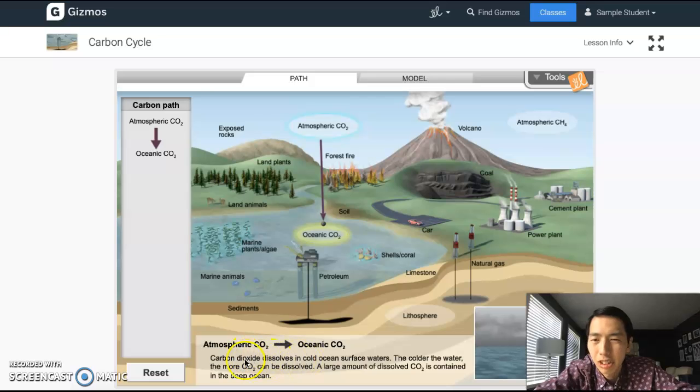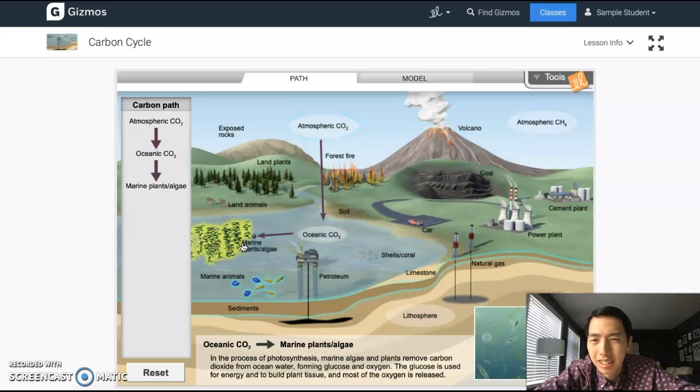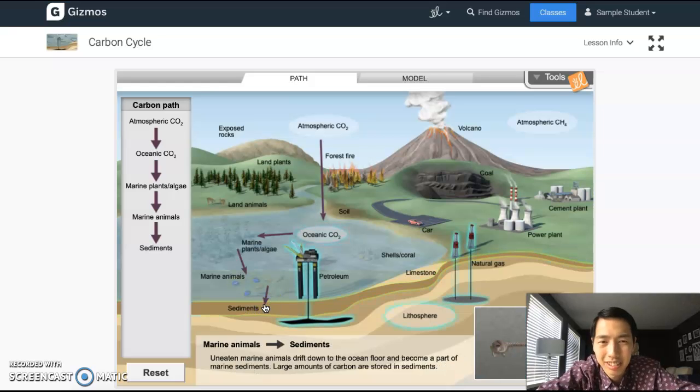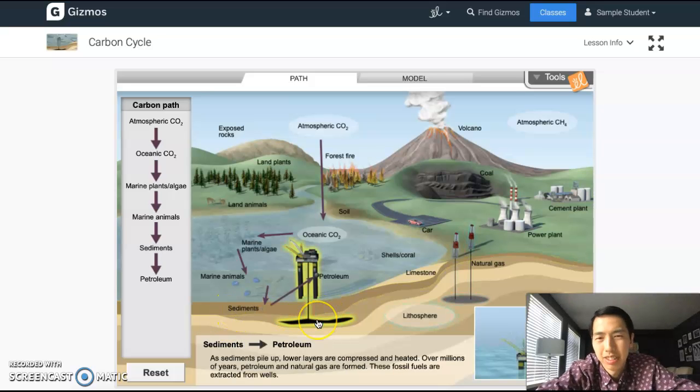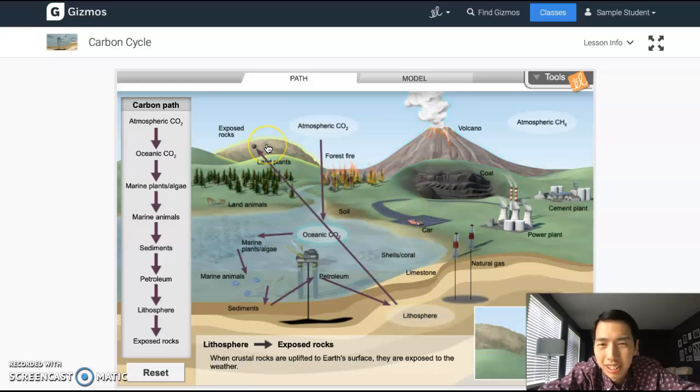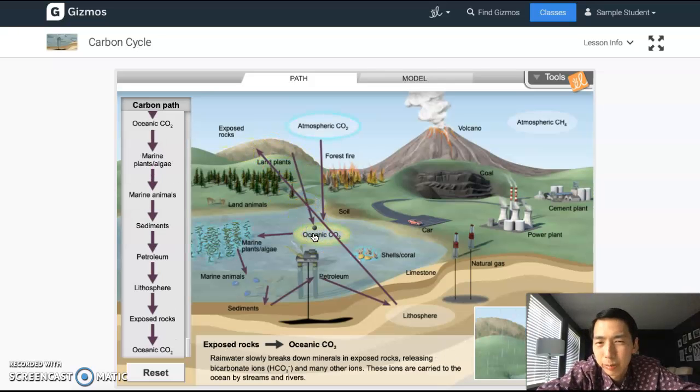I will make a different carbon path now. I can start into the ocean, and I have a note about what happens for carbon dioxide going into the ocean. Then I can go to marine plants, and from the marine plants I can go to the marine animals. From the marine animals I can go to the sediments. I went to the natural gas last time, so maybe this time I'll go to petroleum, and then the lithosphere.